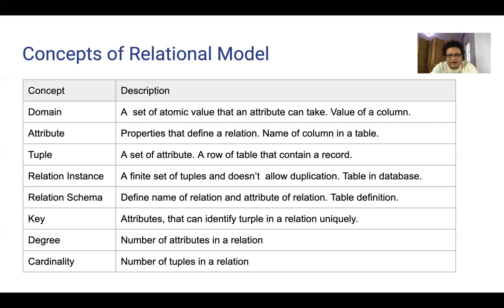Degree — the number of attributes in the relations. The generalities are the relationship.